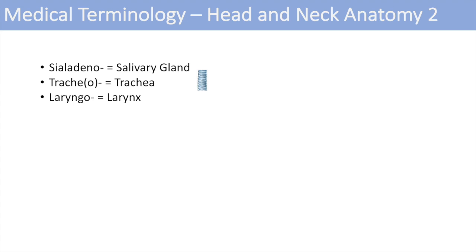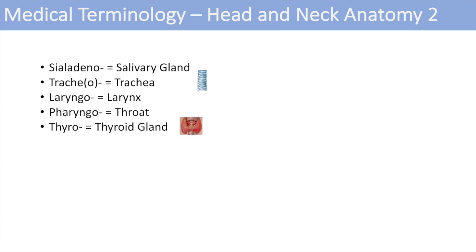Laryngo stands for larynx — you might have had a laryngoscope, a scope down your larynx. The next one is pharyngeo for throat, so you might have pharyngitis, a sore throat. The next one is thyro, which stands for the thyroid gland. The next one is epiglott, standing for the epiglottis — the flap that covers your windpipe when you swallow. You might have heard of epiglottitis, which is more common in children.